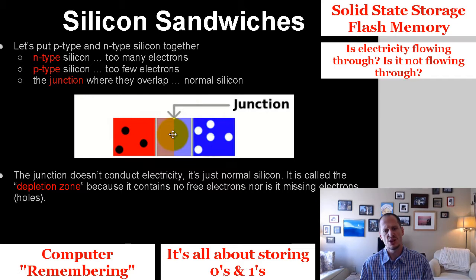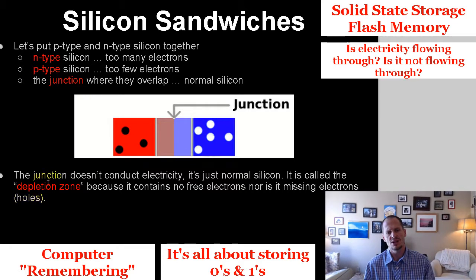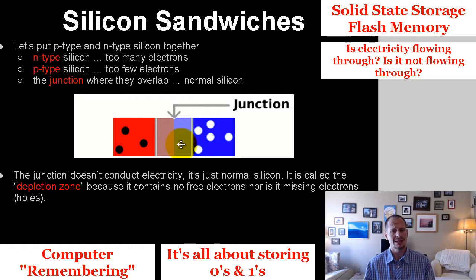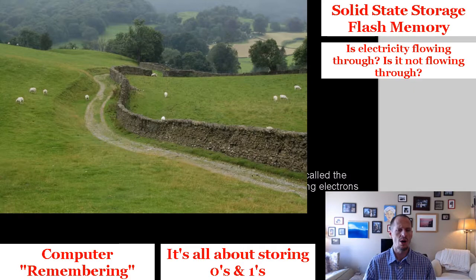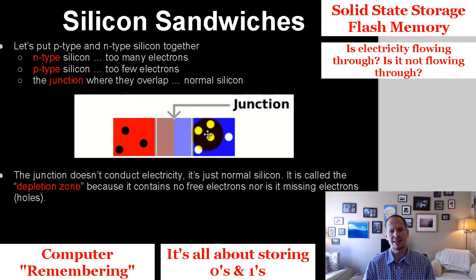This junction is also known as the depletion zone because it doesn't conduct electricity — it's just normal silicon. It contains no free electrons and isn't missing electrons either. In my mind's eye it's kind of like a low wall between the two areas, preventing electrons from flowing from one side to the other.